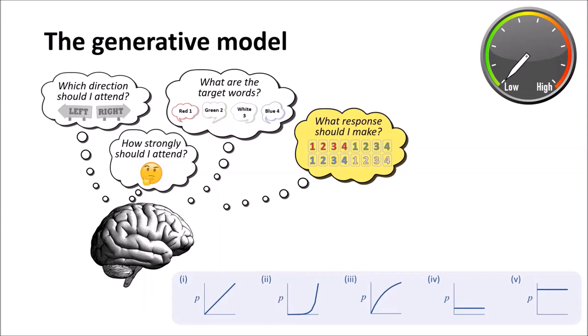And note that the agent can only work out the correct response by observing the visual cue, then using that to attend to the correct location, then responding with the color and number words spoken at that location. We use this generative model to model both reaction times and EEG responses.